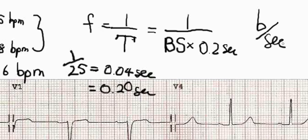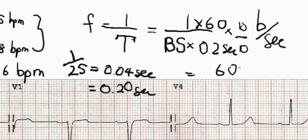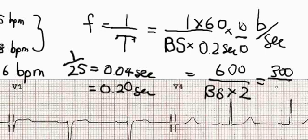Beats per second is pretty unmanageable, so we multiply the whole thing by 60 to give us beats per minute. Simplifying that: 60 divided by 0.2 equals 300, so the formula becomes 300 over the number of big squares — which is exactly how that first formula was worked out.